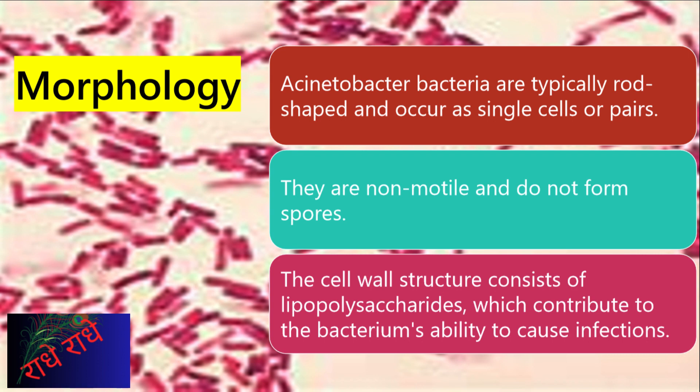Acinetobacter is a rod-shaped bacterium usually existing as single cells or in pairs. It is non-motile, and its cell wall is constructed of lipopolysaccharides, which help it to cause infections. This special set of characteristics makes Acinetobacter a unique genus of bacterium with the ability to cause several ailments.